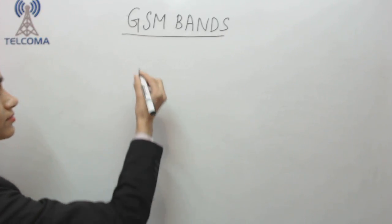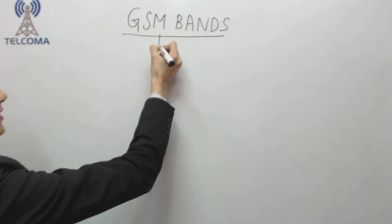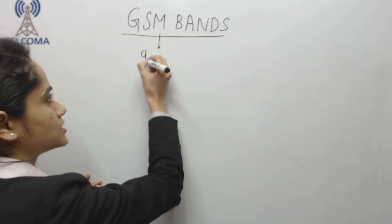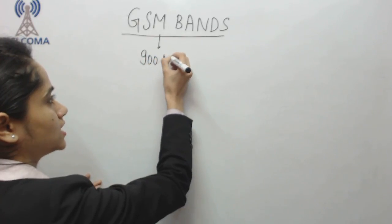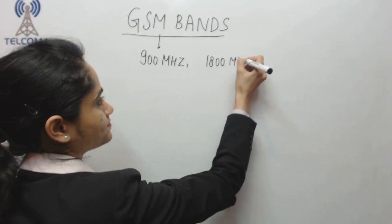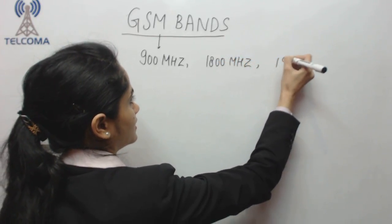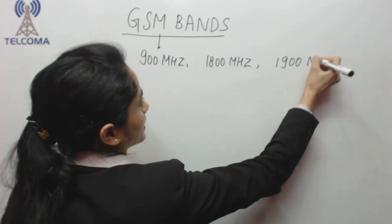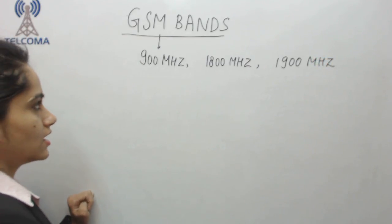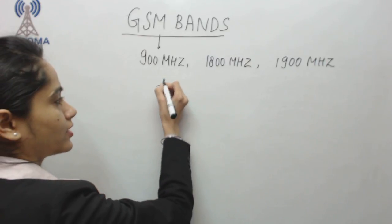Hello and welcome to the class on GSM. Today we are going to discuss GSM bands. A band is basically a range of frequency. For GSM we have 850, 900, 1800, and 1900 megahertz bands available for GSM services, and this is used for radio communication.